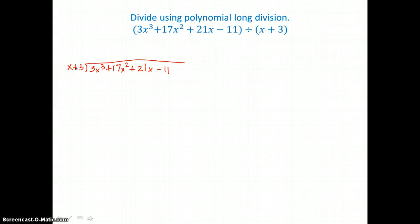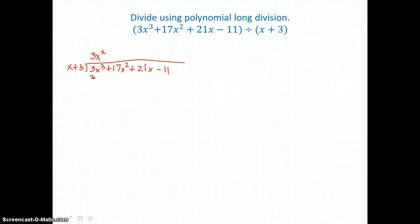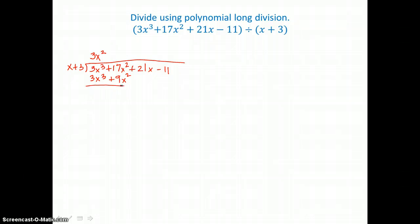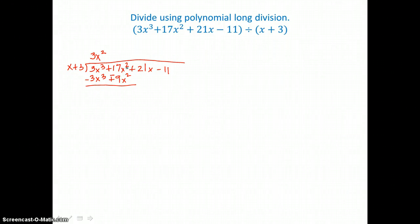We ask: what do we multiply by x to get 3x cubed? That would be 3x squared, so it goes on top. We distribute: 3x squared times x is 3x cubed, and 3x squared times 3 is 9x squared. We change the signs and add. We get 0 in the first column, and 17x squared minus 9x squared is 8x squared, leaving 8x squared plus 21x minus 11.